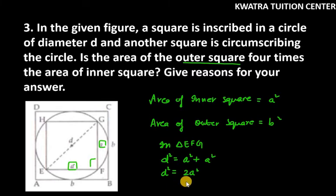From this, we can find the value of a². a² is d² over 2. So a² equals d²/2.